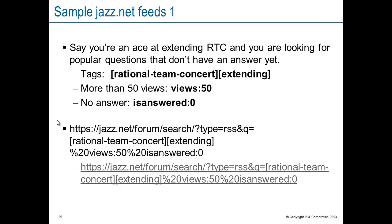So let's look at some samples. Say you're an ace at extending RTC — you understand how to write and contribute advisors and are good at working with work item attribute customizations in JavaScript. You also want to give other people a chance to answer; that's how everyone learns. So you decide to look for Rational Team Concert tag and extending tags, and you want questions that have been seen by at least 50 people already and still don't have an answer. The slide shows our options and also shows the structure of the RSS URL — you can even write the RSS URLs by hand. The first written-out version shows the base URL to do a search, return it as an RSS feed, and start the question. Then you just add in terms, being careful to URL encode spaces as percent 20.